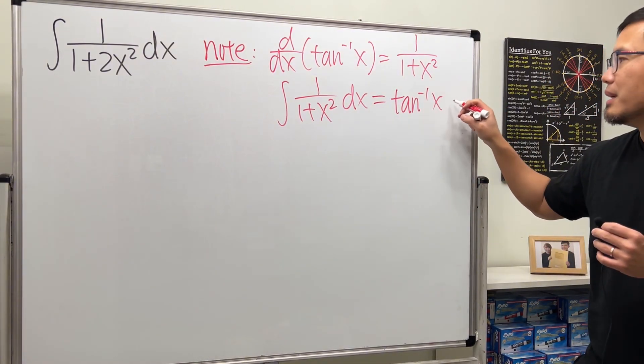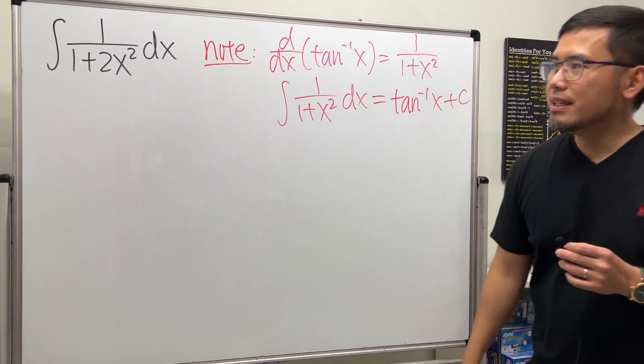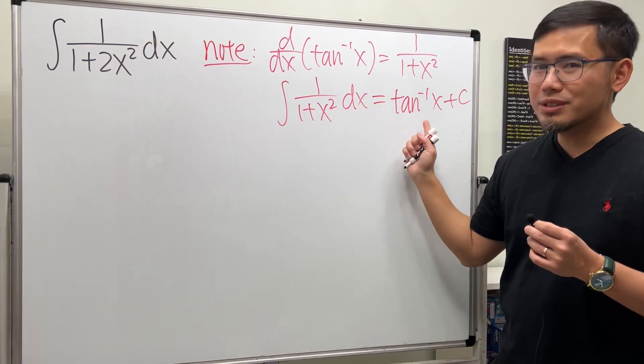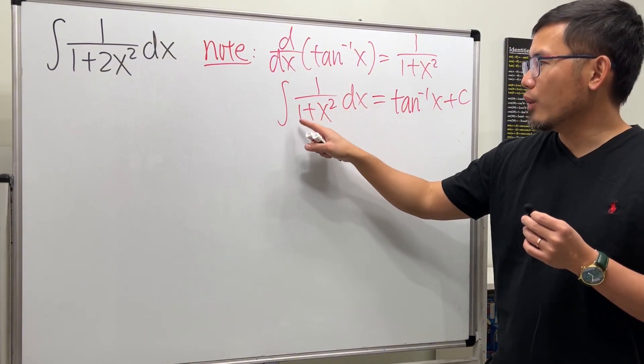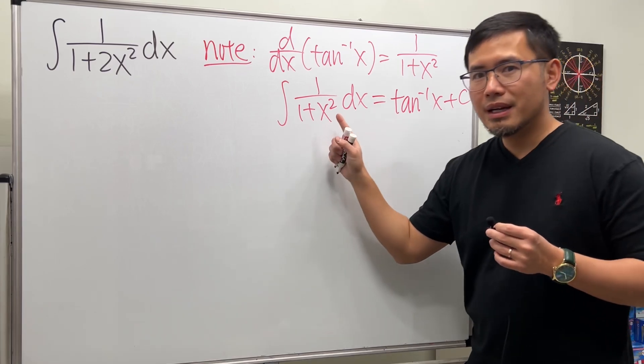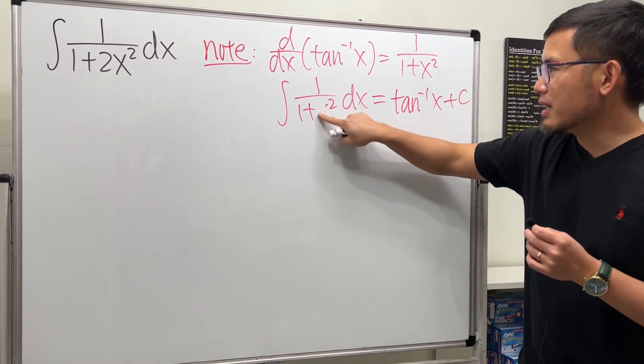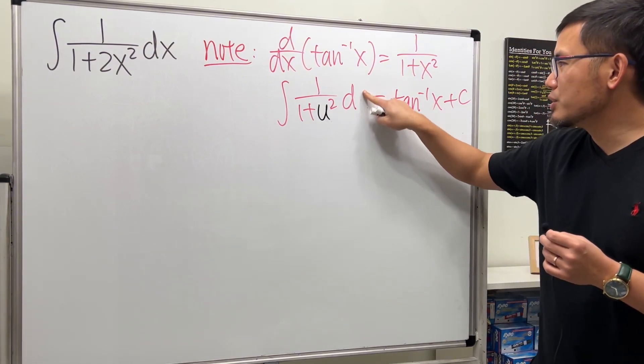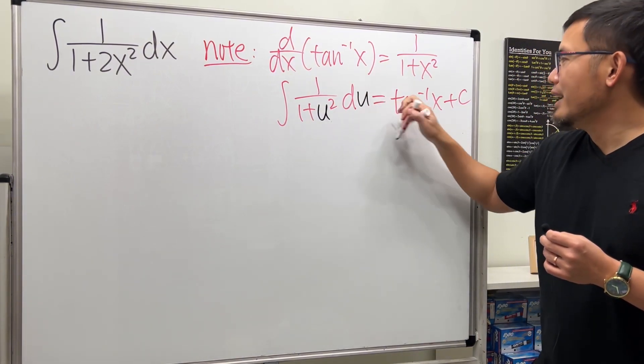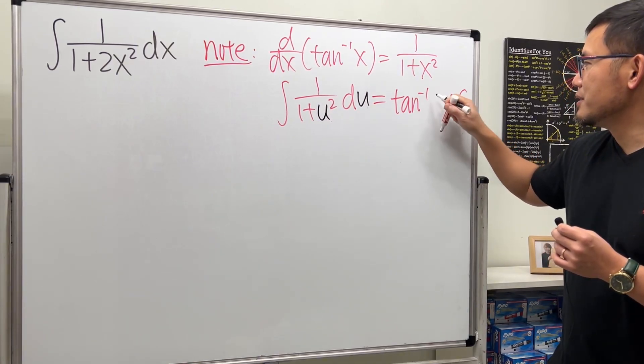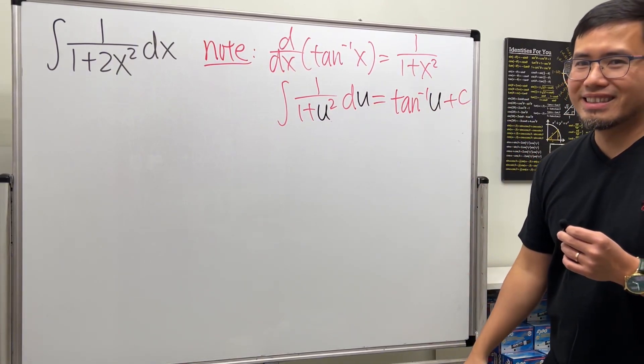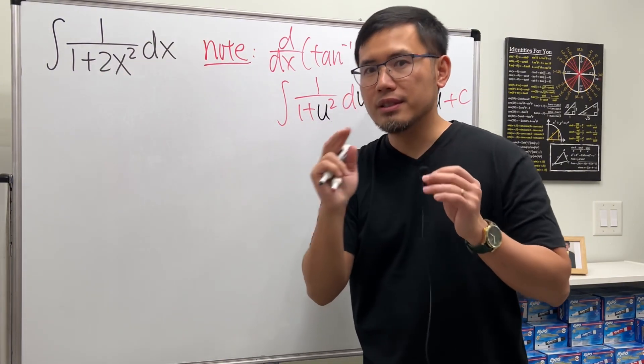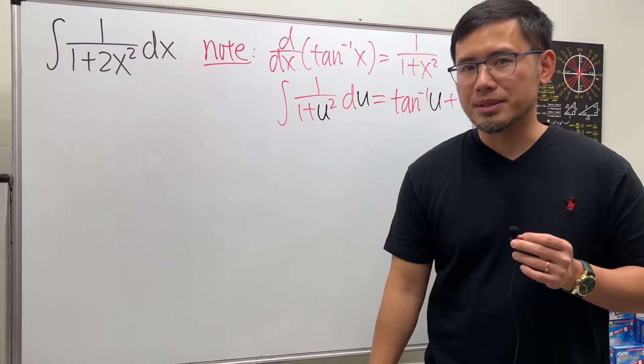x plus c. We must utilize this somehow. In order for us to use this, you see we have 1 over 1 plus this thing. Instead of putting down x, let's change that to be u. The trouble is we have the 2, so we must put this into a parenthesis squared in order to do the u-substitution.